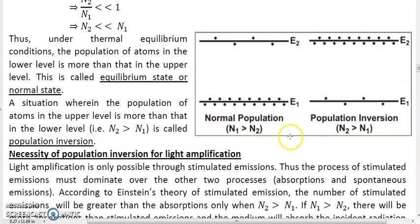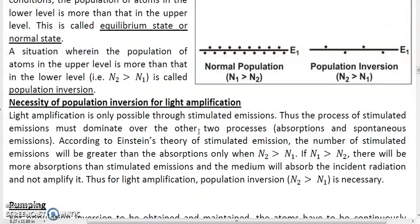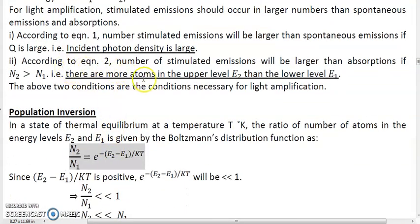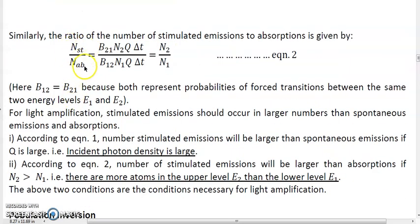An important question here is: why is population inversion necessary for light amplification? It is an essential condition for light to be amplified. Light will never be amplified, laser will never occur without achieving a state of population inversion — without achieving a state wherein there are more atoms in the upper level than in the lower level. It is as per Einstein's theory. We have seen in Einstein's theory that the second condition requires that if light is to be amplified, if the number of stimulated emissions are to be more than the number of absorptions, then N2 must be greater than N1. If N2 is less than N1, that means stimulated emission is less than absorption — in other words, there are less stimulated emissions compared to absorptions.